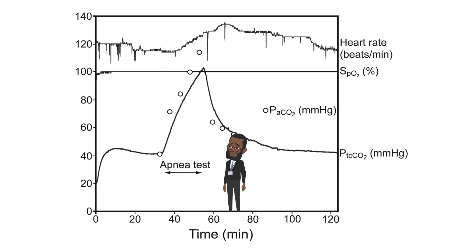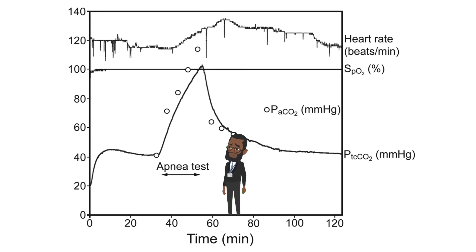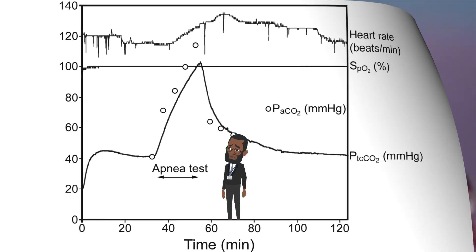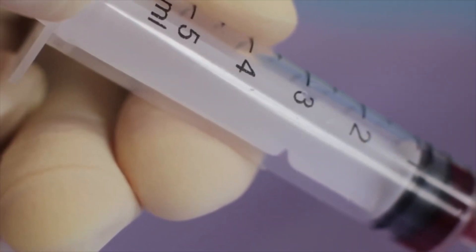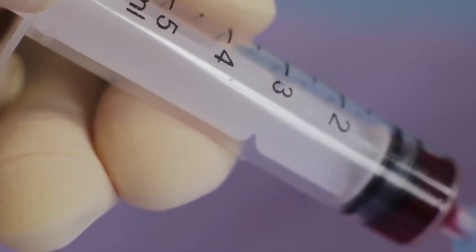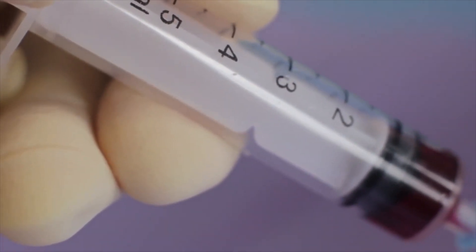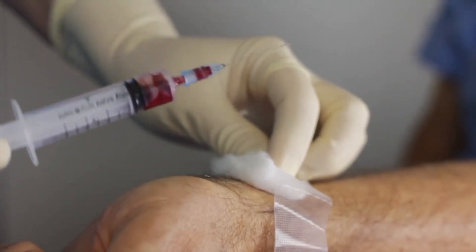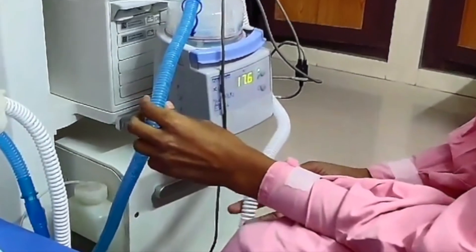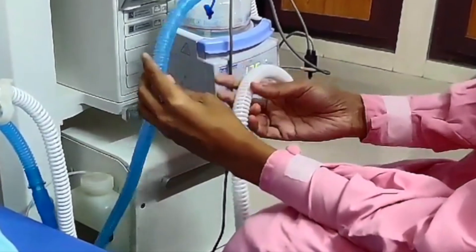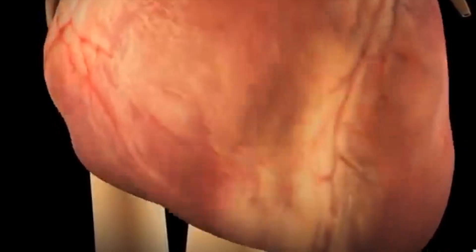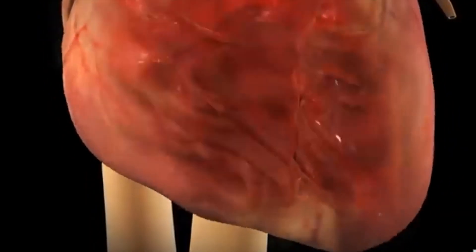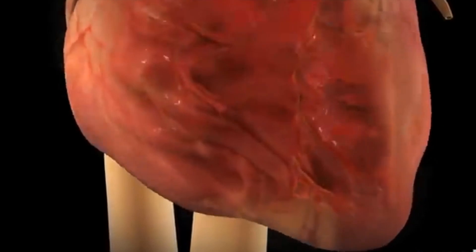Get serial blood gas analysis until the PCO2 is more than 60 millimeters of mercury. PCO2 rises at 3 millimeters of mercury per minute, so typically draw at 5, 8, and 10 minutes. Then reconnect the respirator when complete. Stop the test if you have dysrhythmia or severe hypotension.